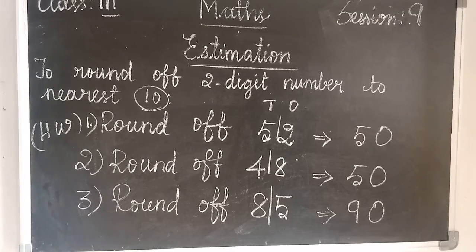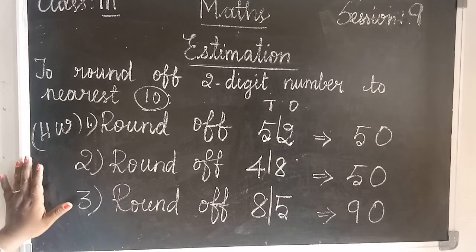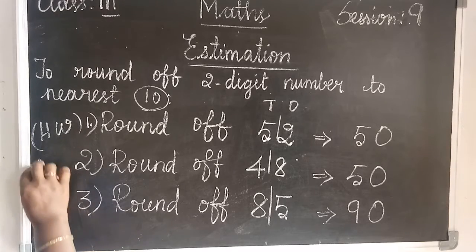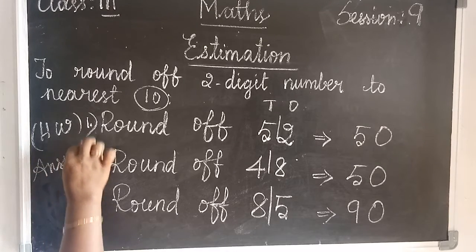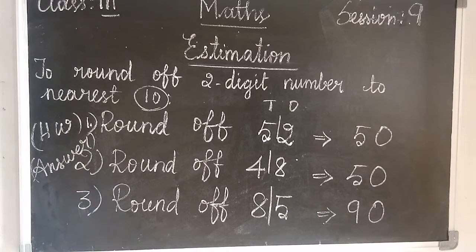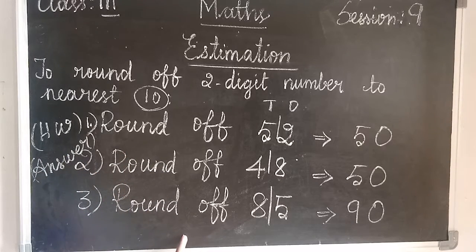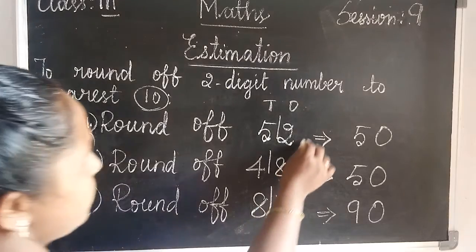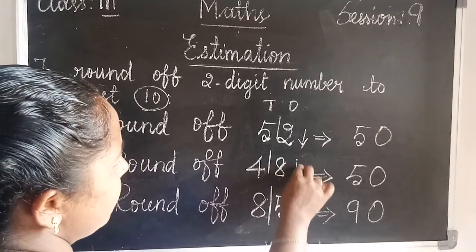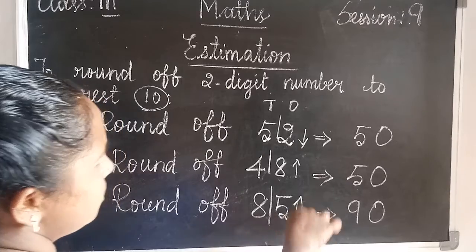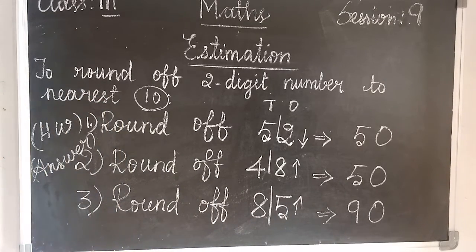Hello children. You see the last class homework answer. Question number 1, 2, 3. The ones place value is decreasing and the second number is increasing. The third number is also increasing. So you check your answer.